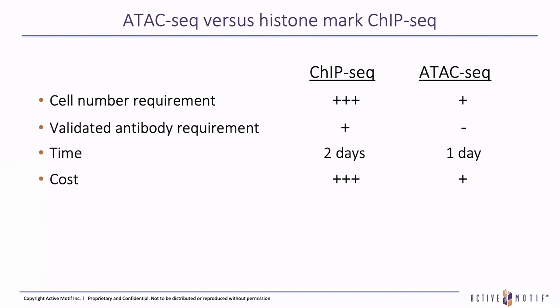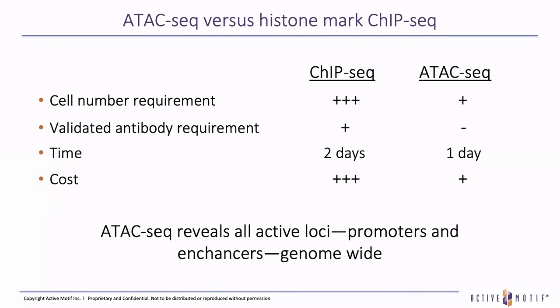Therefore, with ATAC-seq there are fewer cells needed, less troubleshooting, less time, and less cost. Also, ATAC-seq reveals all the active loci for promoters and enhancers genome-wide. While ChIP-seq is going to tell you exactly where a specific mark is on the genome, ATAC-seq will generally reveal all of the open chromatin.